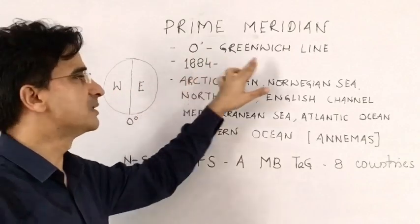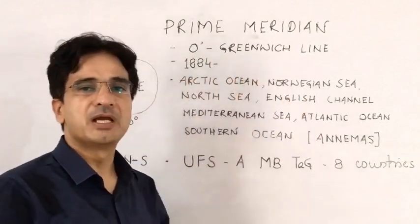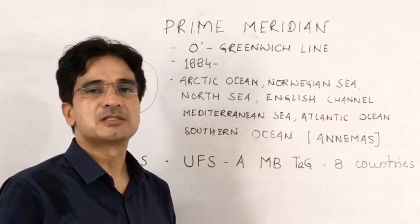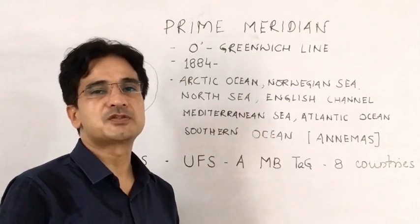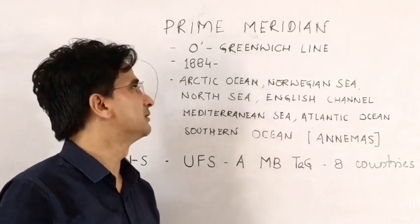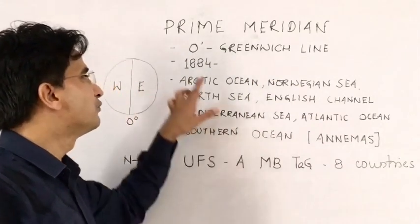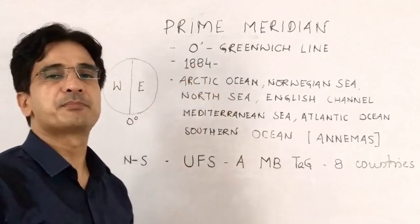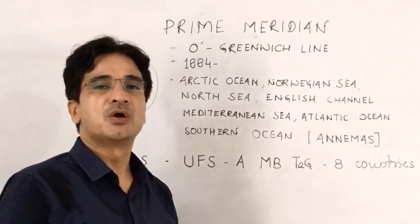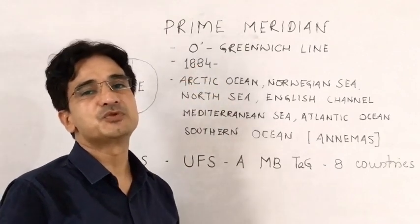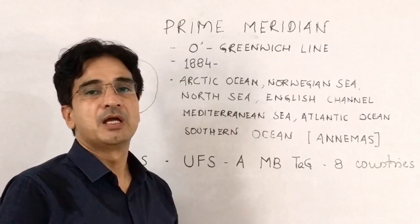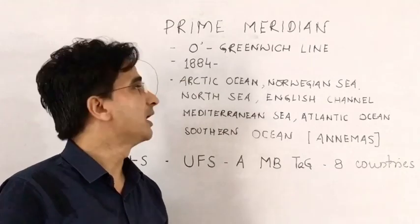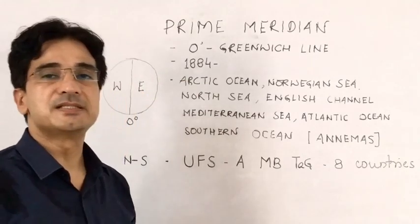It is also known as the Greenwich Line as it passes through the Royal Observatory Greenwich, located slightly east of London. It was selected in 1884 as the Prime Meridian or standard time zone for the whole world in the International Meridian Conference held at Washington DC.